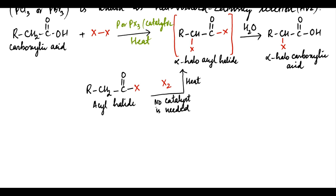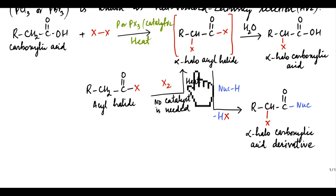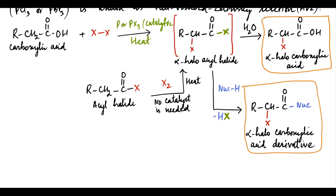The alpha-haloacyl halide can be treated with different nucleophiles to form various alpha-halogenated carboxylic acid derivatives. Thus alpha-haloacyl halide can be either hydrolyzed to form alpha-halocarboxylic acid or reacted with nucleophiles to form alpha-haloacid derivatives. The halogen in the catalyst phosphorus trihalide is shown in green color.